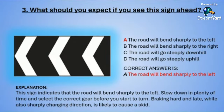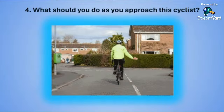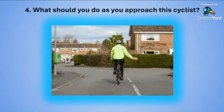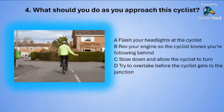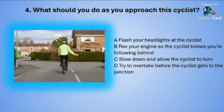Question number four: What should you do as you approach this cyclist? A: flash your headlights at the cyclist. B: rev your engine so the cyclist knows you are following behind. C: slow down, allowing the cyclist to turn. Or D: try and overtake before the cyclist gets to the junction.